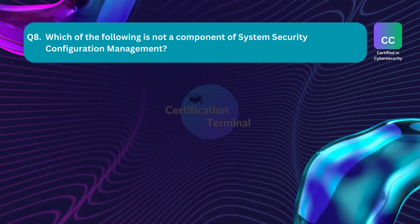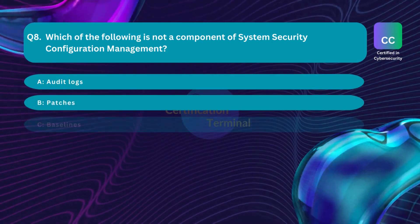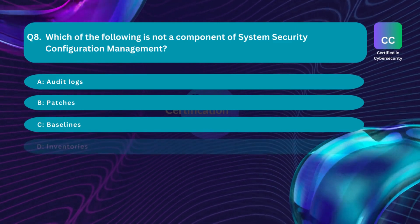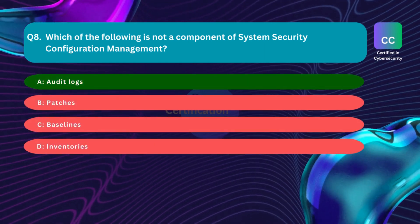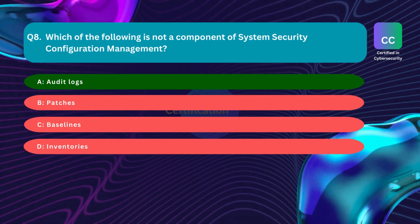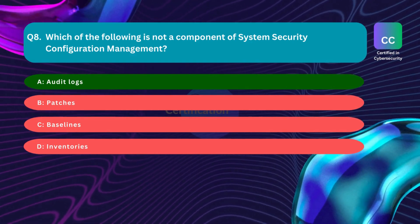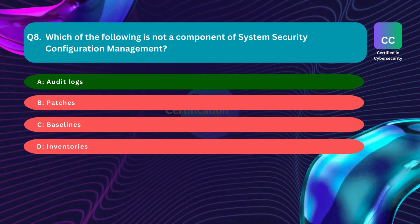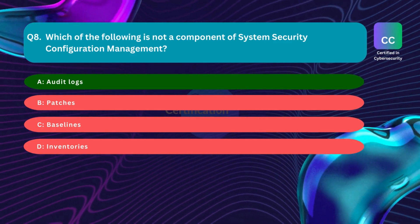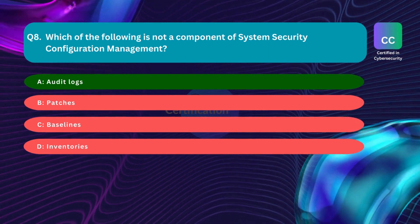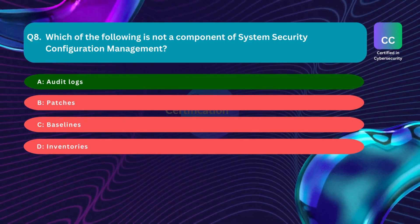Question number eight: Which of the following is NOT a component of system security configuration management? Option A: audit logs. Option B: patches. Option C: baselines. Option D: inventories. The correct answer is Option A — audit logs. Security configuration management involves adjusting default settings of an information system to increase security and mitigate risk. Its components are inventories, baselines, updates, and patches. Audit logs are generated during the verification and audit phase, which is a procedure within configuration management but not one of its core elements.